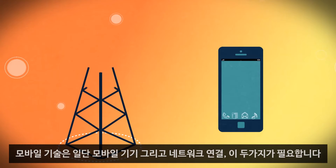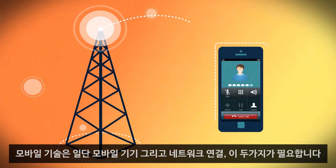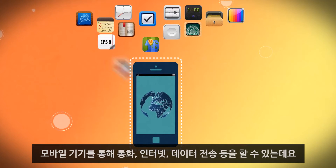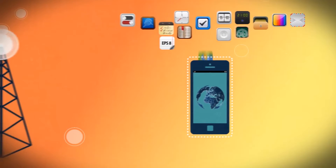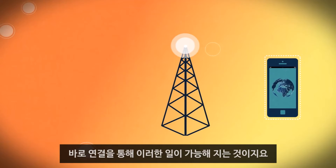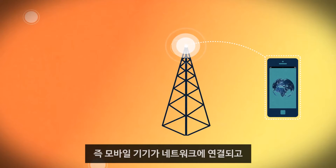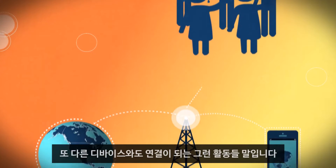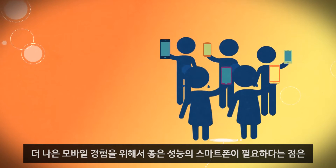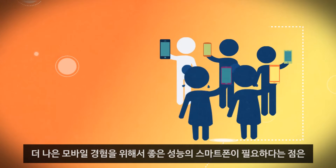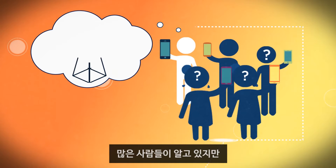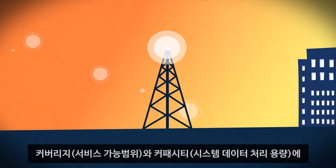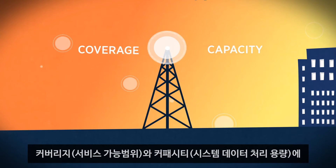At the most basic level, mobile technology requires a device and a network connection. The device lets you make phone calls, get on the internet, and upload and download whatever you want. The connection is what makes it possible to do those things, linking the device to a network shared by other devices around the world. Most people know how important the right smartphone is to enabling great experiences, but far fewer understand just how important the connection is to making it all possible.